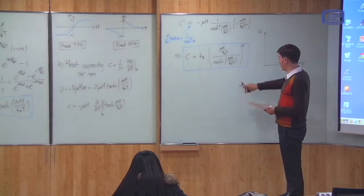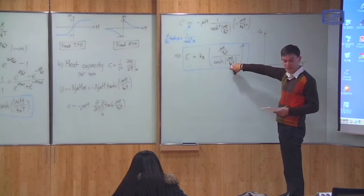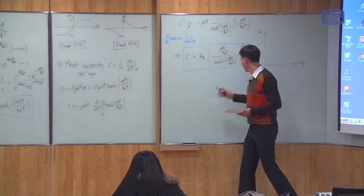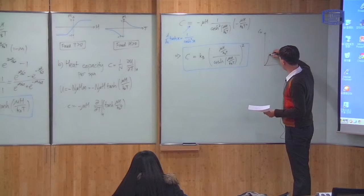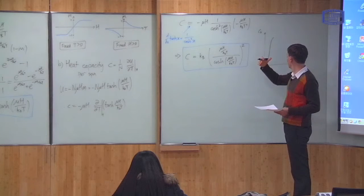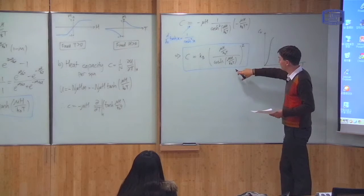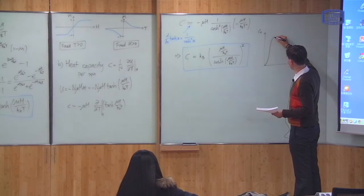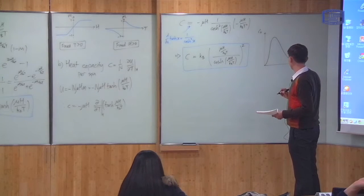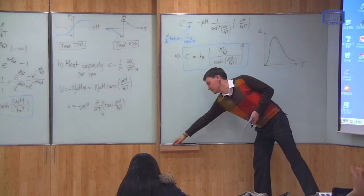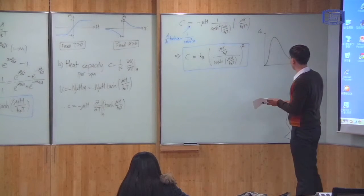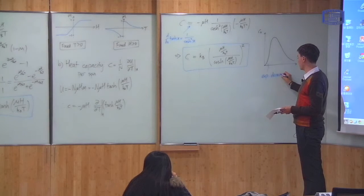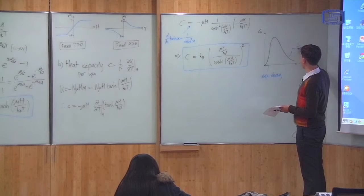If the temperature is very small, the argument μH/kBT is very large, and cosh grows exponentially, so the heat capacity goes to zero with an exponential decay. It then rises to a maximum, and if T becomes large, μH/kBT approaches zero, and the expression goes like 1/T². So at high temperatures the heat capacity falls off as 1/T².